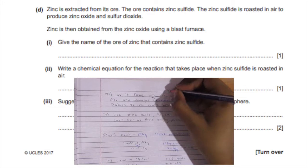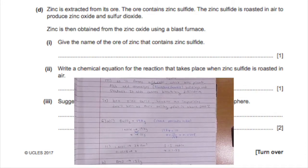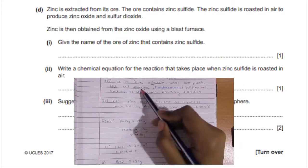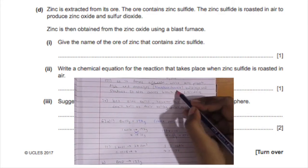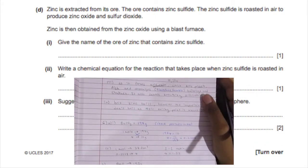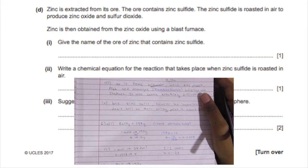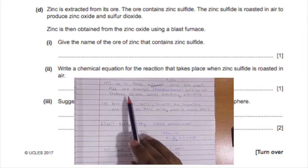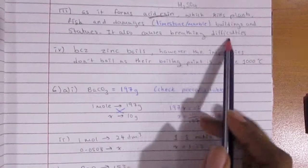Now the problem with the sulfur dioxide is that it can form acid rain when it reacts with water forming sulfuric acid, which ends up killing plants, fish, and damages limestone or marble buildings and statues. Limestone is like calcium carbonate and it also causes breathing difficulties. So you can mention any of these problems and you get the mark for it.